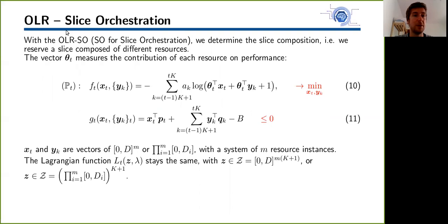We also implement an extension of the OLR algorithm, which is a slice orchestration extension. Then we determine the slice composition. We no longer reserve for the number of slices, but for the different types of resources that compose the slice. For that, we need a new vector theta which measures the contribution of each resource on the performance. The idea is that we slightly modify problem PT to introduce the vector theta. Now performance of our reservation is obtained through the scalar product of theta Xt or theta Yk. We again try to minimize this function while complying with the constraint. The vectors Xt or Yk at each slot are vectors of dimension M, where M is the number of resource instances we can reserve, and they must belong to the Cartesian product of segments [0, Di], where Di is the upper bound for resource of type i.